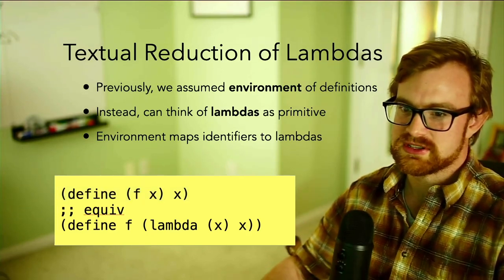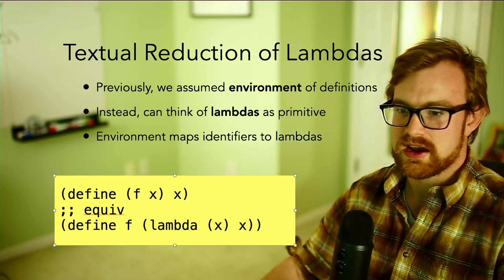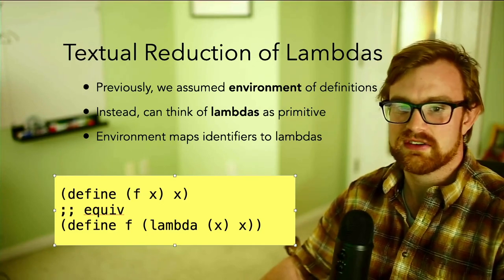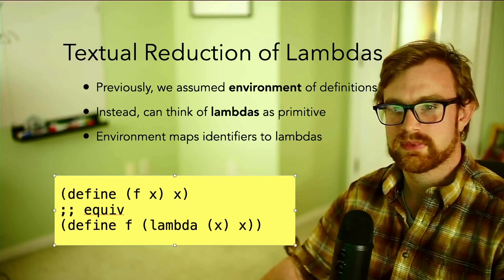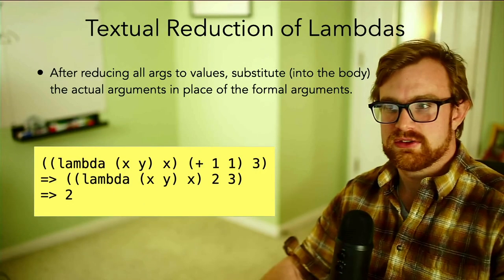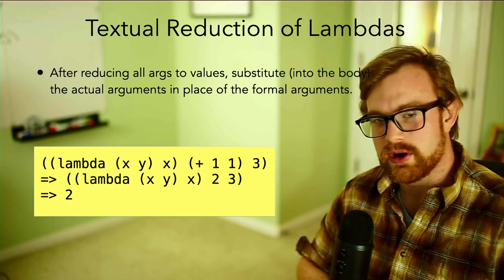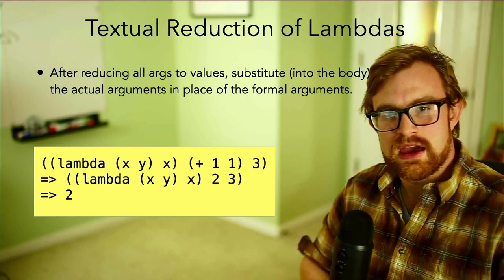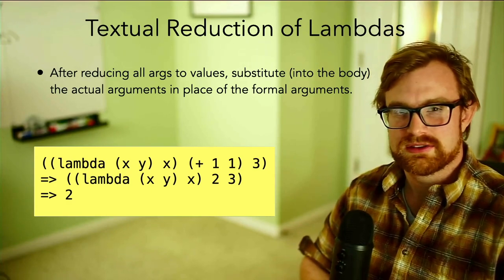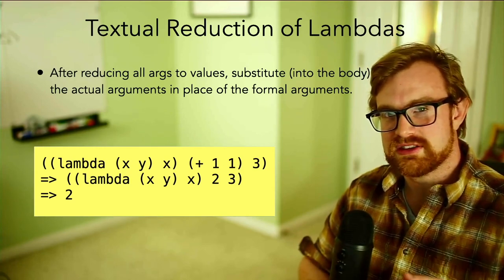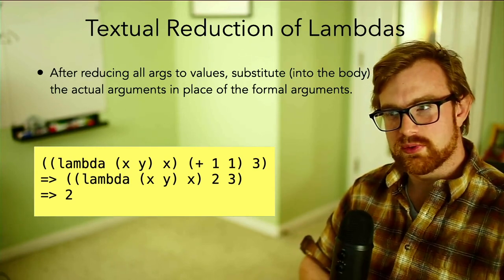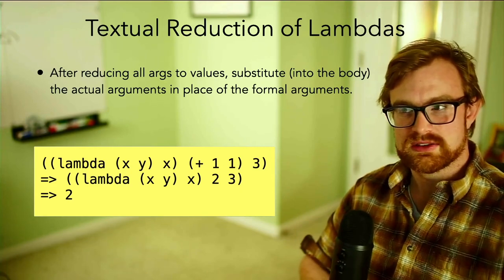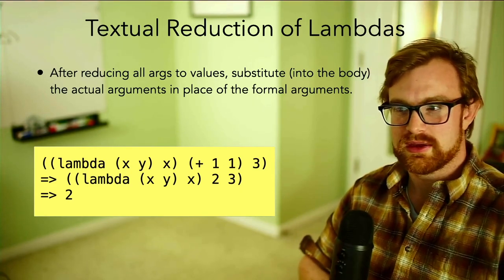Looking back at the slides: any time I could write a define form defining a function f(x), I could equivalently use just a lambda. So I can really think of lambda as the primitive thing a language handles. The formal rule for textually reducing lambdas in a call-by-value language like Racket is: after reducing all of the arguments to values, substitute into the body the actual (runtime) arguments in place of the formal arguments.